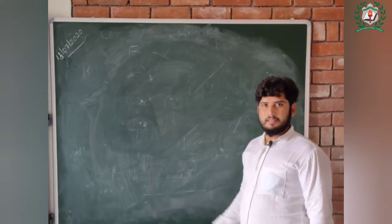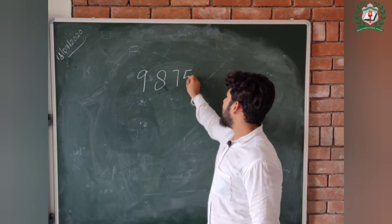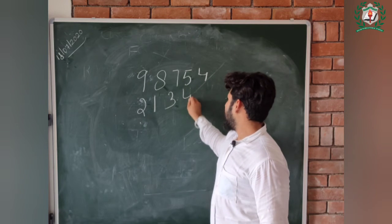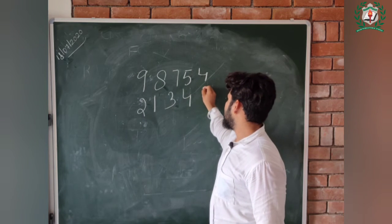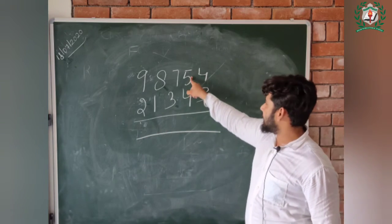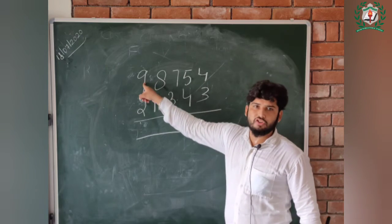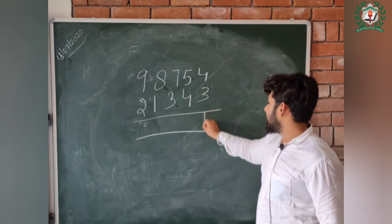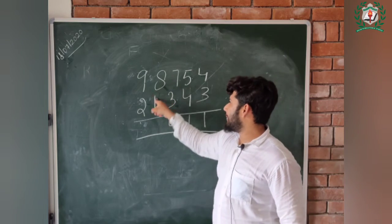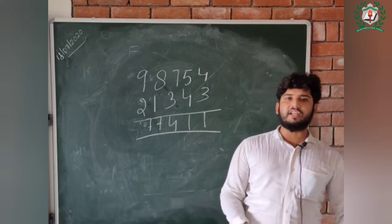Let's see one example: 98754 minus 21345. Ones below ones, tens below tens, hundreds below hundreds, thousands below thousands, ten thousands below ten thousands. Four minus three is one. Five minus four is one. Seven minus three is four. Eight minus one is seven. Nine minus two is seven. Like this you have to do the subtraction.